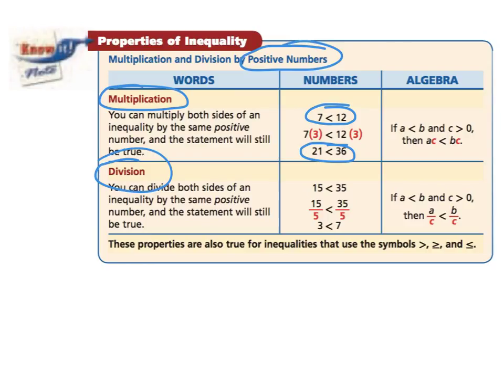It also works for division. Remember, we're dealing with positive numbers here. If we start out with 15 is less than 35 and divide both sides by 5, the new inequality we get is 3 is less than 7, which is also true. So these two properties allow us to multiply and divide by the same number on both sides of an inequality to help us solve it.